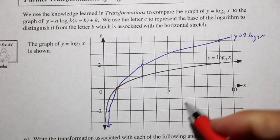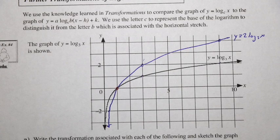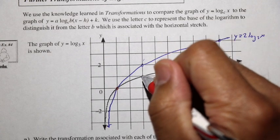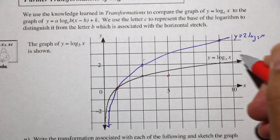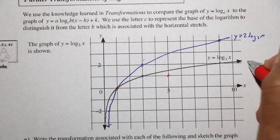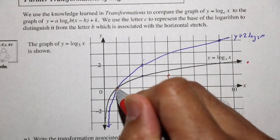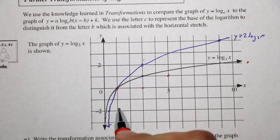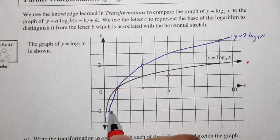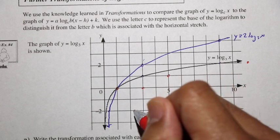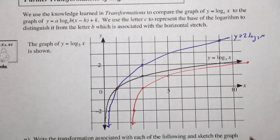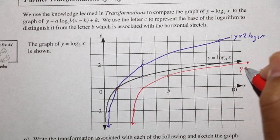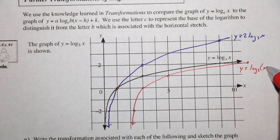Using a red pen for y equals log base 3 of x minus 2 — 2 units to the right means each point shifts right by 2. This point moves 2 units this way, and the point at (1, 0) moves to (3, 0). Drawing this shifted curve gives us y equals log base 3 of x minus 2.